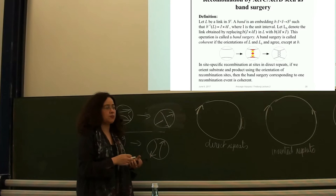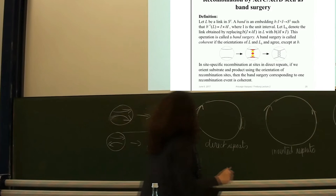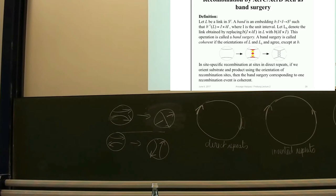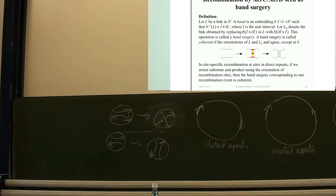If site-specific recombination occurs at sites in direct repeats — the case we're studying for the replication links — and we orient the substrate and product using the orientation of the recombination sites, then the band surgery corresponding to one recombination event is coherent. Band surgery is called coherent if the orientations of L and L_B agree, except at the band. If two sites induce the same orientation into the circle in the substrate, the product may be a two-component link, and the components inherit the orientation of the recombination site.